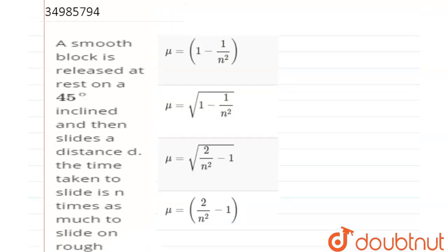So what do we need to do? Two cases are given. The angle of inclination is 45 degrees. One case is when there is friction — the block slides down.